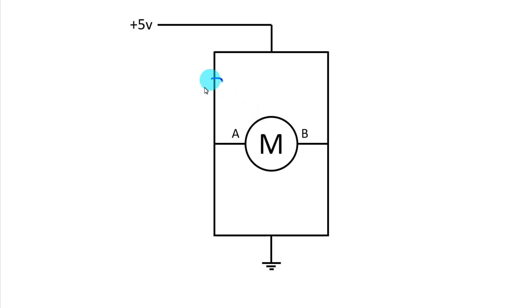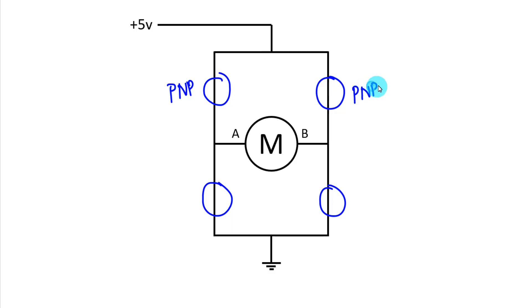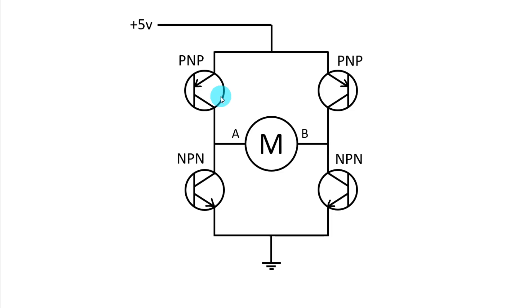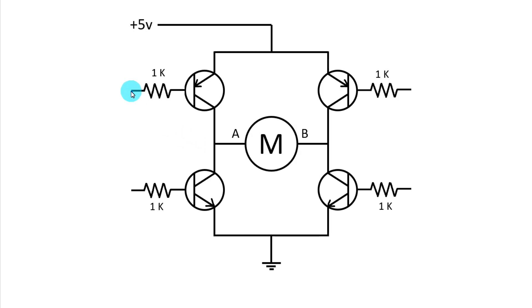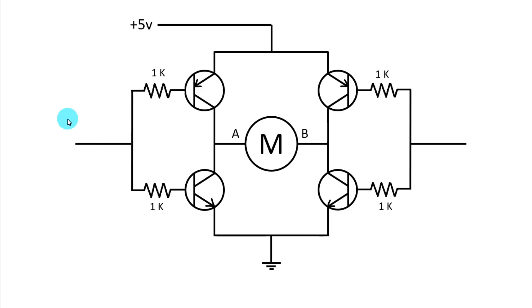We need 4 transistors: 1, 2, 3, and 4. These two transistors should be PNP transistors, and these two should be NPN transistors. You can use any PNP or NPN transistor. I am using BD140 as PNP and BD139 as NPN. With the base of each transistor we are going to connect a 1 kilo ohm resistor. We have to connect both signal pins, and at these points we will provide the signal from a digital IC or microcontroller — either 1 or 0. When we provide 0, we connect the pin to ground; when we provide 1, we connect it to 5 volts.